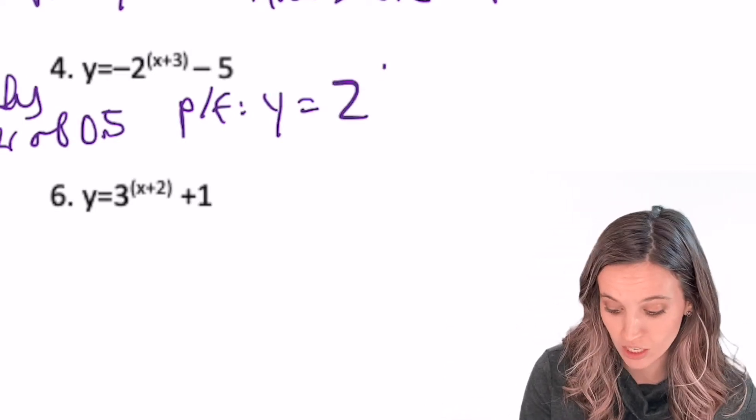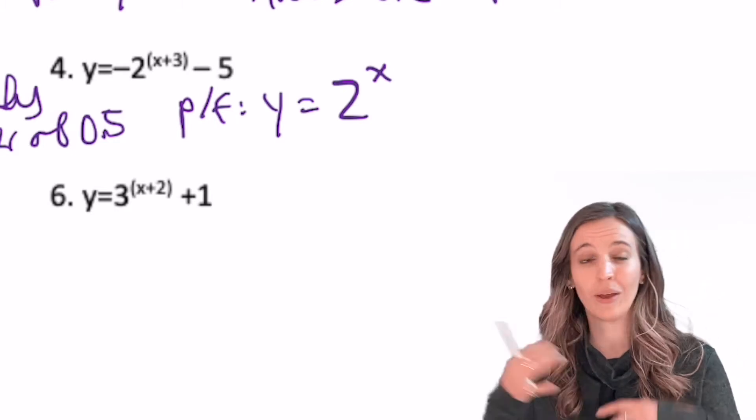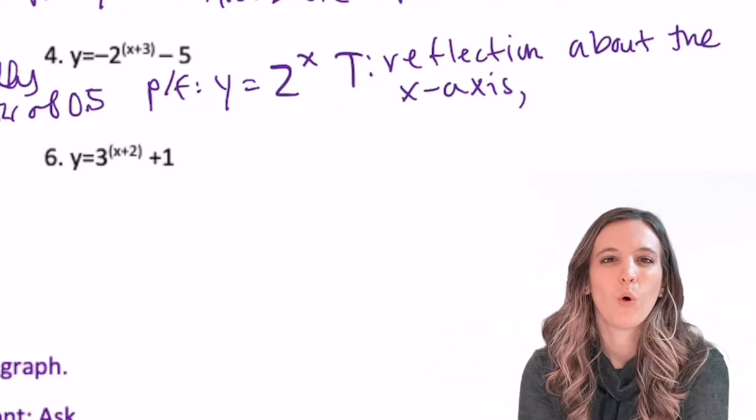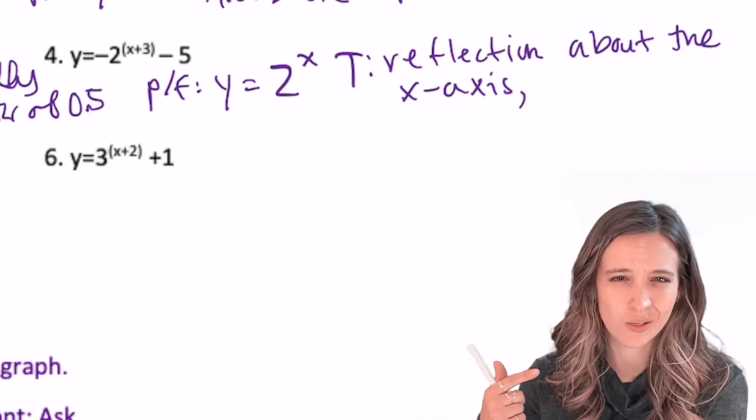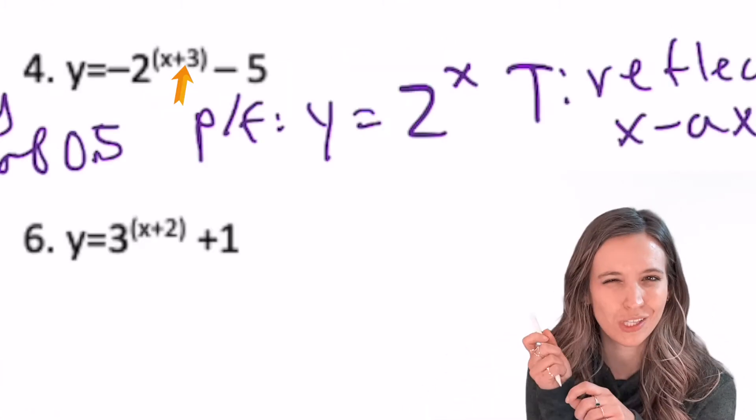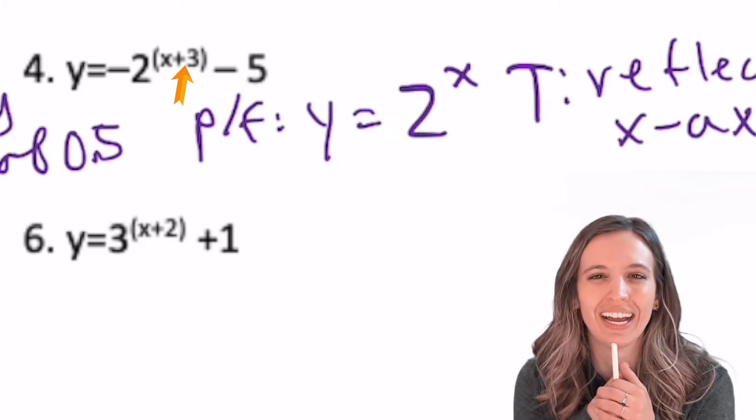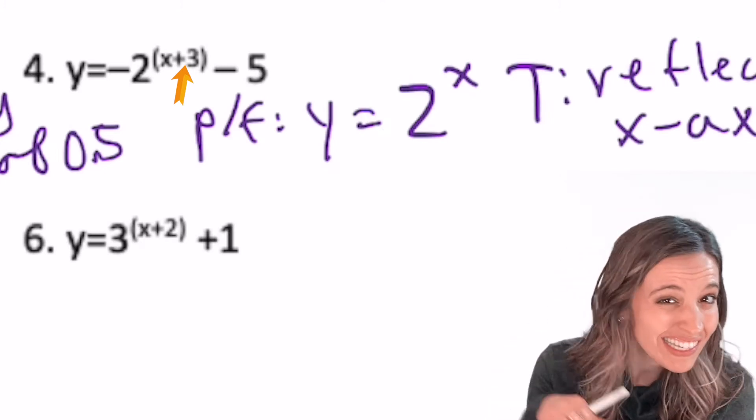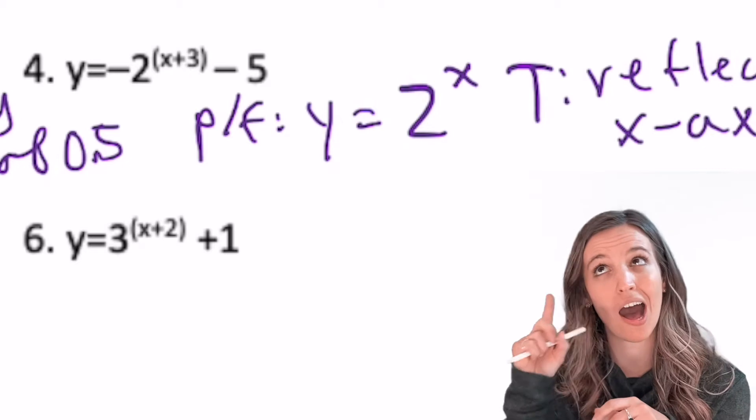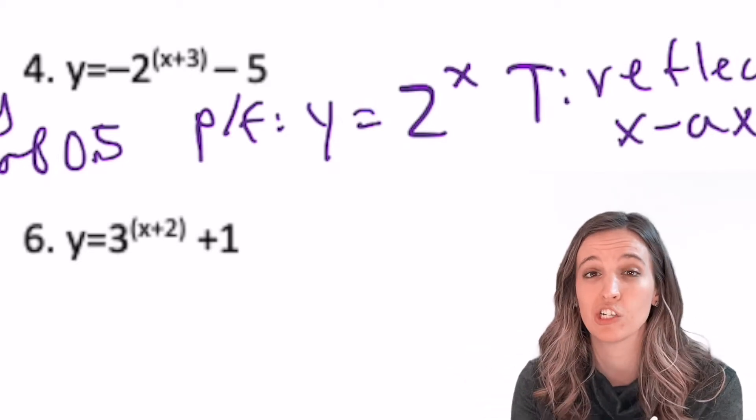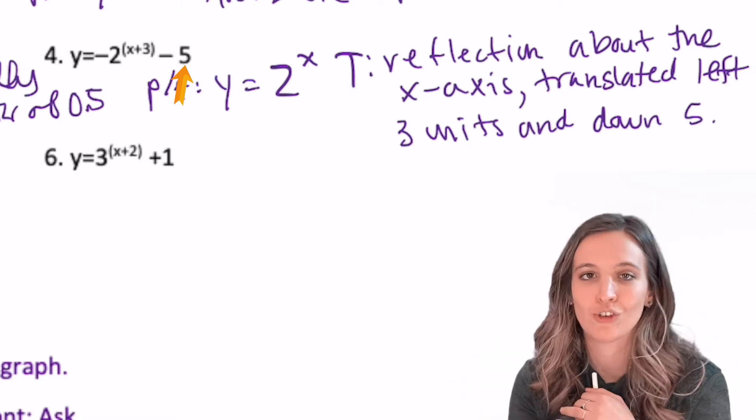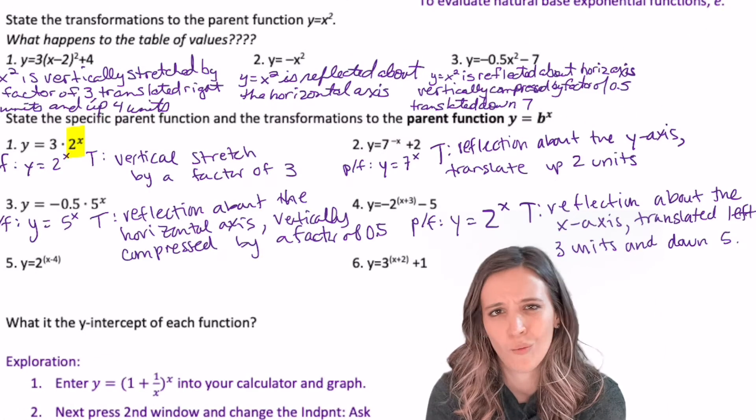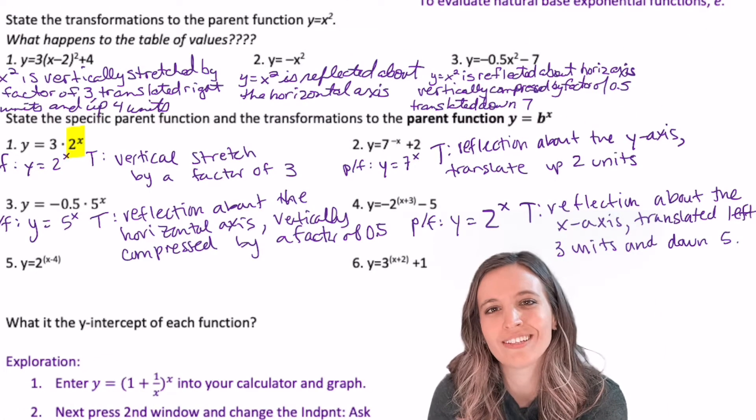That means that y equals 2 to the x is my parent function, so now we have a ton of transformations to identify. Well, we know that negative out in front is just a reflection about the x-axis, but what do you think about that plus 3 up with that x in the exponent? It's like it's inside with the x, so inside opposite, so it's going to be a translation to the left 3 units. Minus 5? We just know that's translated down 5. All right, we're pros. Go do those last two, 5 and 6.